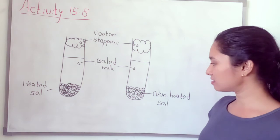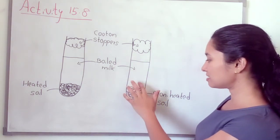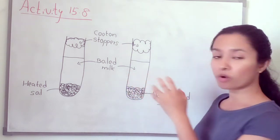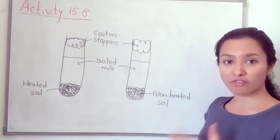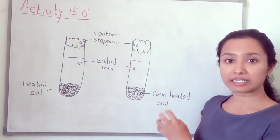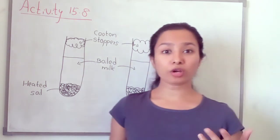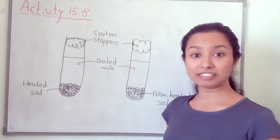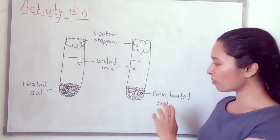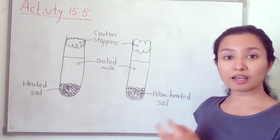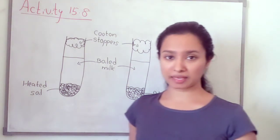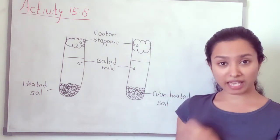While observing, the boiled milk in the test tube with the non-heated soil sample coagulates faster, but the milk in the heated soil sample test tube coagulates very slowly. The reason for this coagulation is that microorganisms are needed for the coagulation of milk. Since there is a cotton stopper, outside microorganisms cannot enter. The non-heated soil sample contains microorganisms, which go into the milk and coagulate it. It is clear that there are microorganisms in the soil.